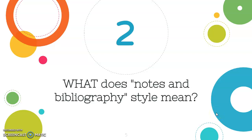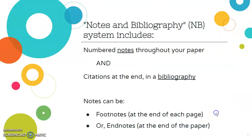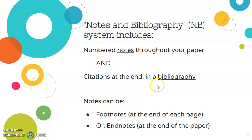So let's talk about what Notes in Bibliography style means. Chicago style has two variations, one of which is called the Notes in Bibliography system, commonly referred to as NB for short. It basically works just like it sounds: there are numbered notes used throughout your paper, and there are citations at the end of your paper in a bibliography. That's how it gets its name — there are notes and a bibliography in your paper.